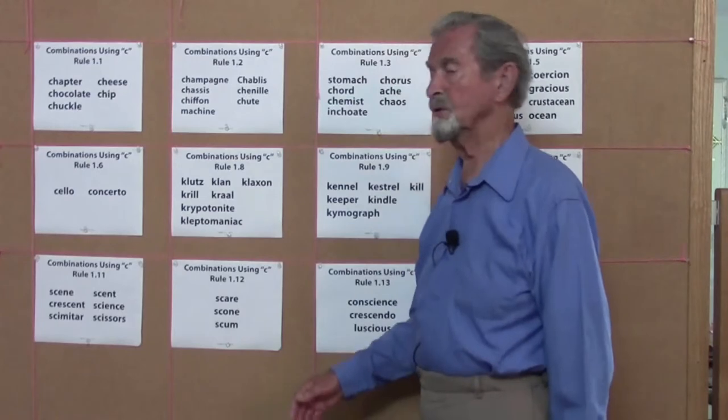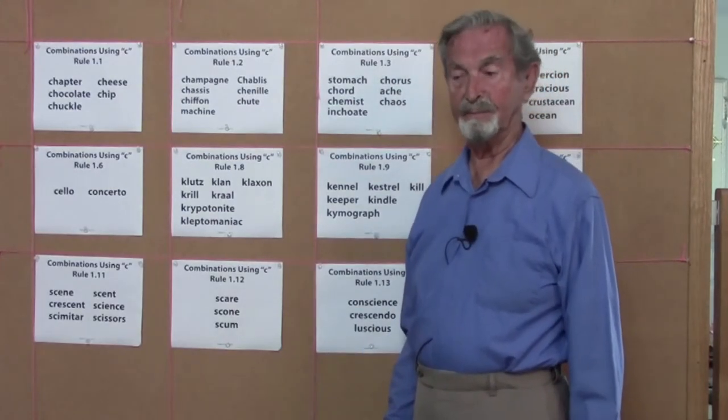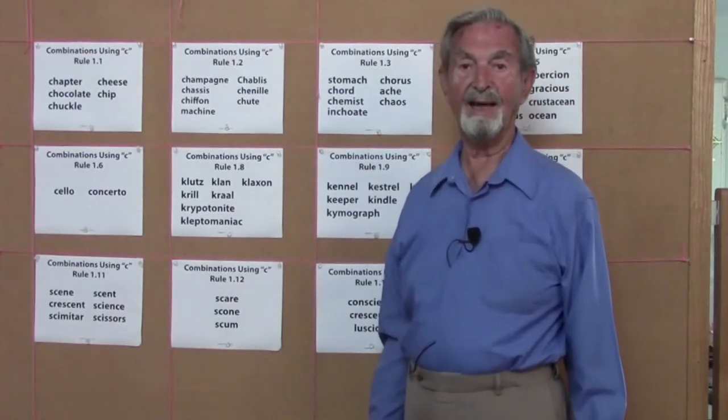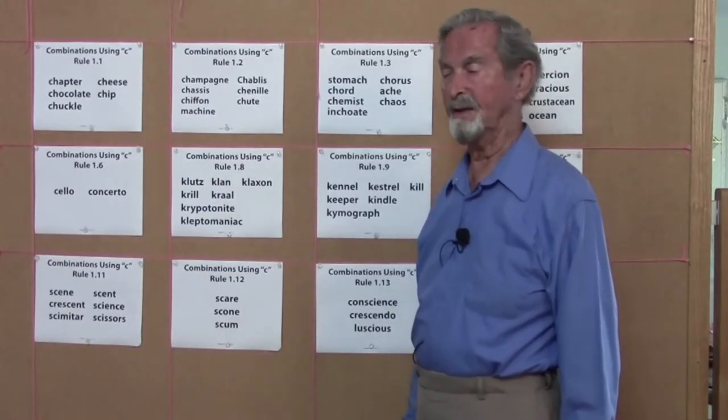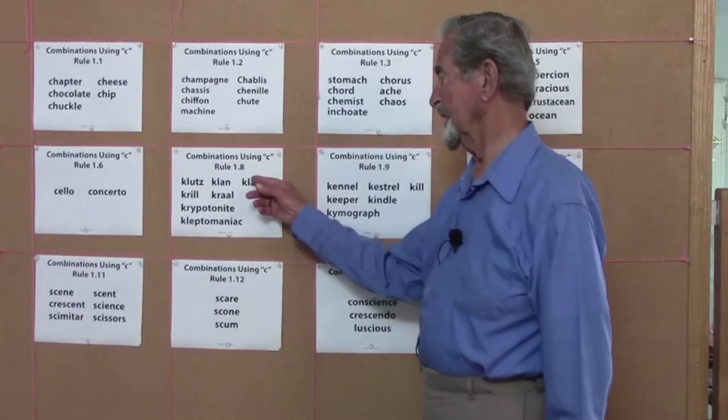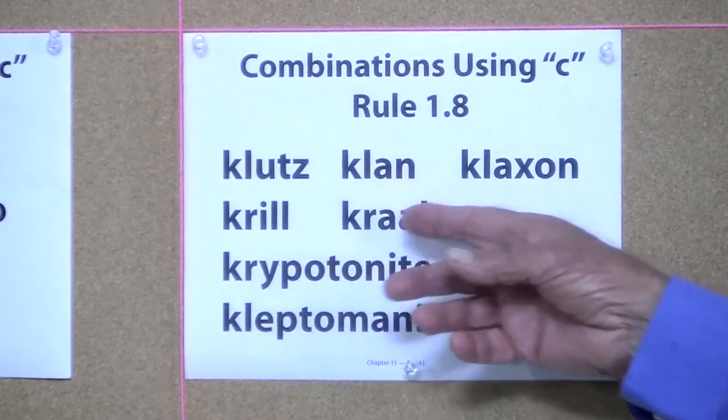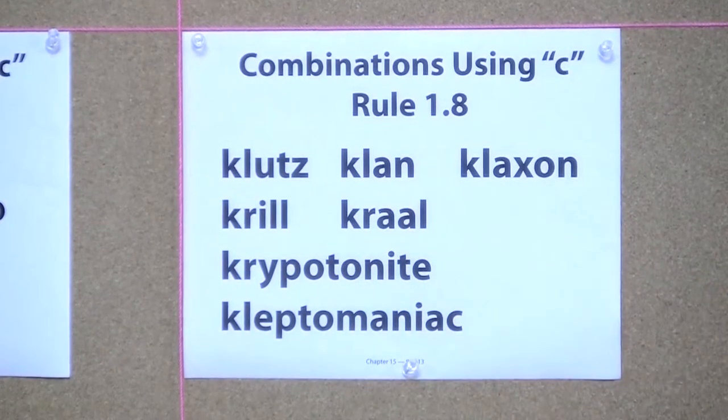Now of course, there are many times when you think, well, it could be spelled with a K, and many imported foreign words are indeed spelled with a K: klutz, klan, klaxon, krill, kroll.